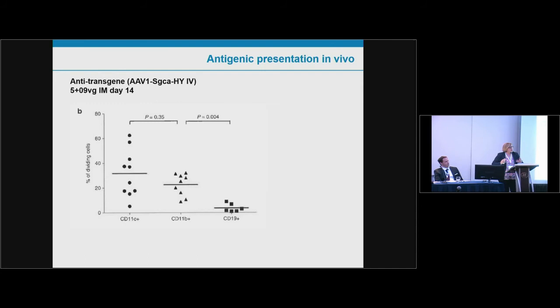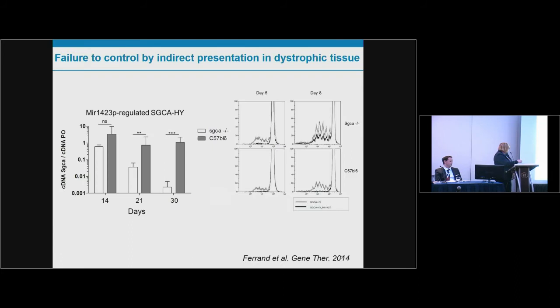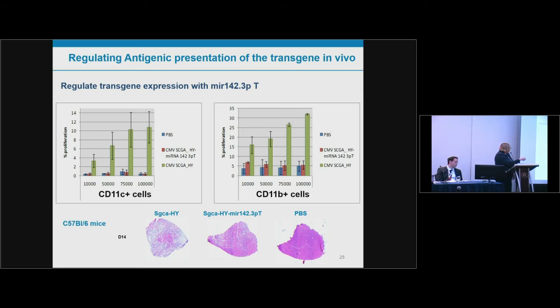One approach is to regulate transgene expression — controlling it only in the tissue of choice but not in the immune system. Using microRNA 142-3p target sequences can detarget transgene expression from cells of hematopoietic origin, including CD11C positive cells and CD11B monocyte macrophages. This has a dramatic effect in preventing destruction when very immunogenic transgenes are injected into muscle — without this regulation you see destruction and infiltration, but with this control it is prevented.